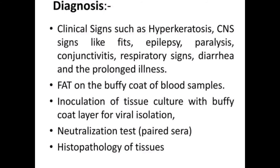Diagnosis of canine distemper is based on clinical signs such as hyperkeratosis, central nervous system signs like fits/epilepsy/paralysis, conjunctivitis, respiratory signs, and diarrhea. Inclusion bodies found in the buffy coat of blood samples may confirm the disease. Inoculation of tissue culture with the buffy coat layer for viral isolation, neutralization tests, and histopathology of tissues may confirm the causative agent.